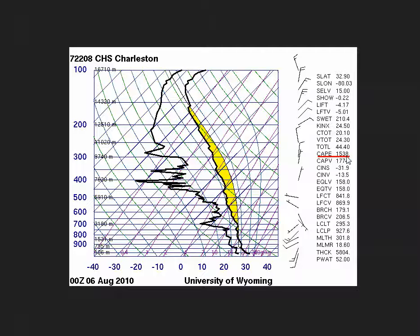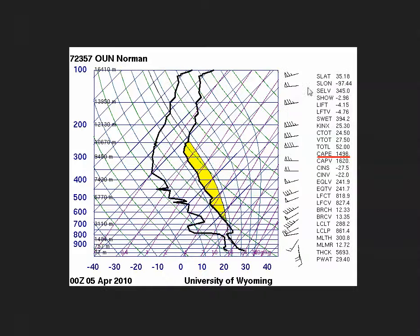But what's different about the two profiles? At Charleston, the CAPE is kind of tall and skinny, while the positive area on the Norman sounding is notably shorter and fatter. The temperature difference between the environment and a rising air parcel is greater on the Norman sounding.